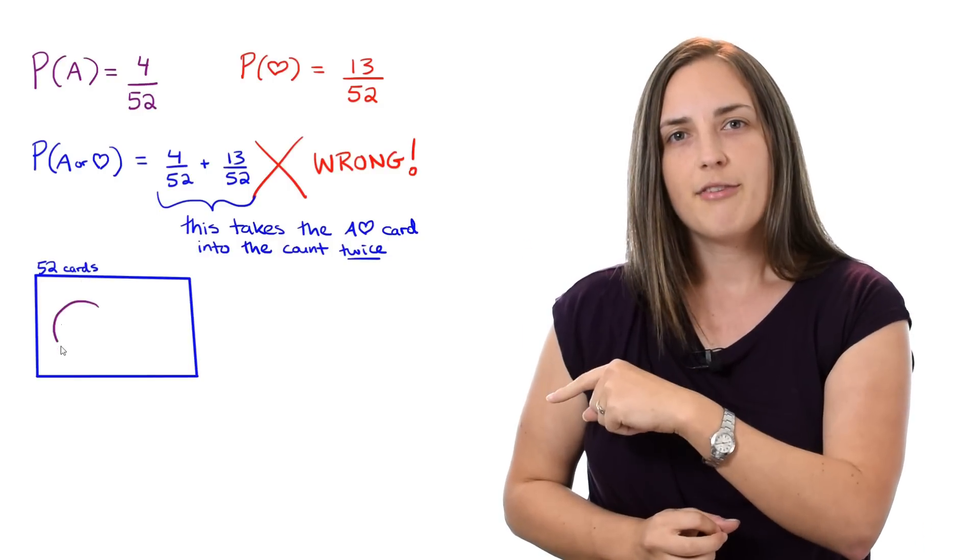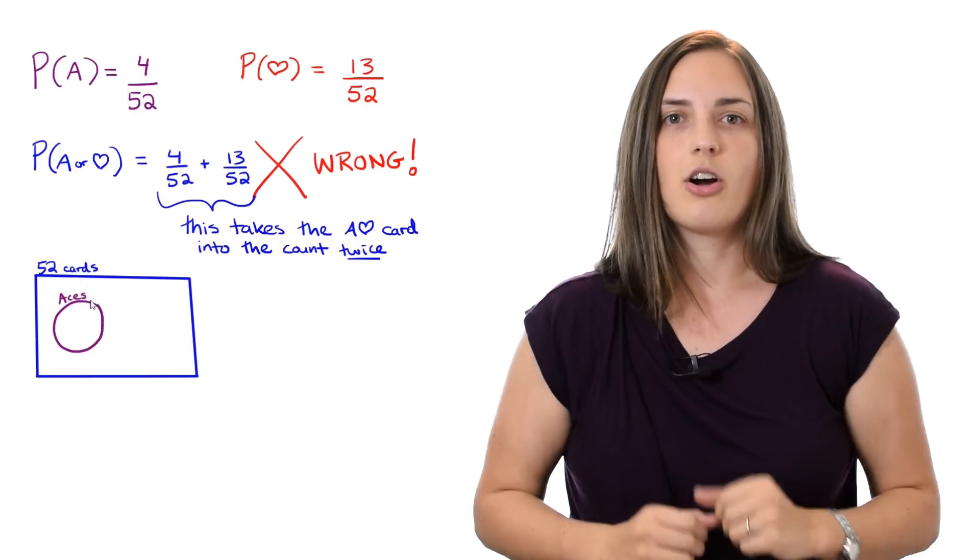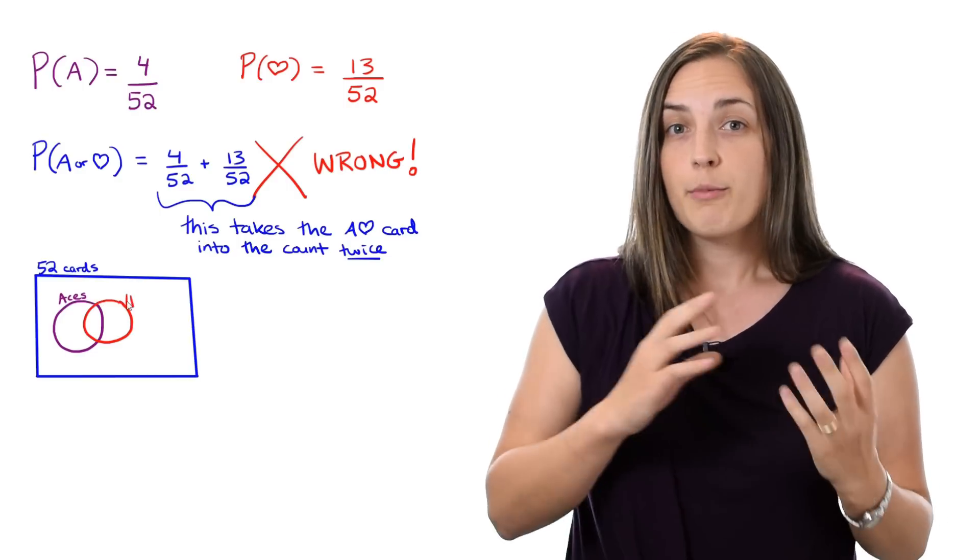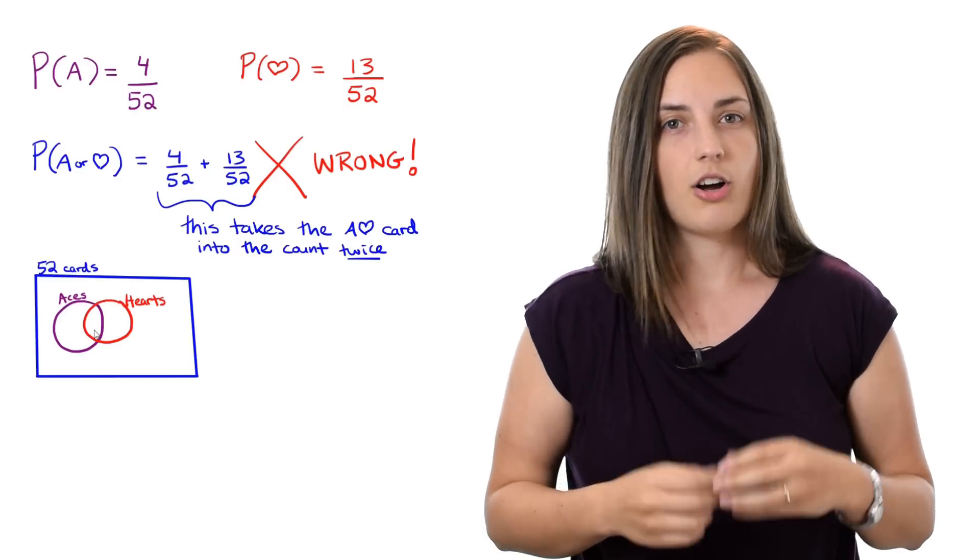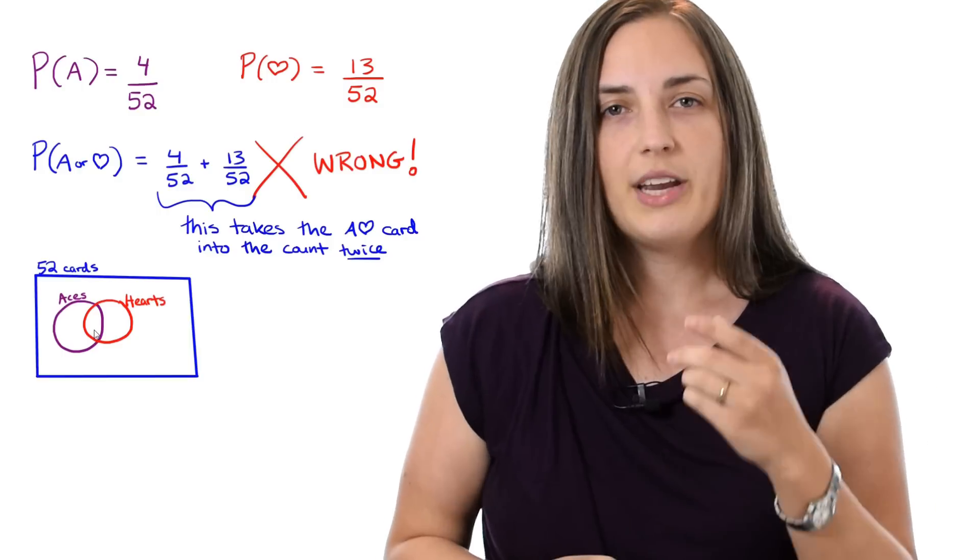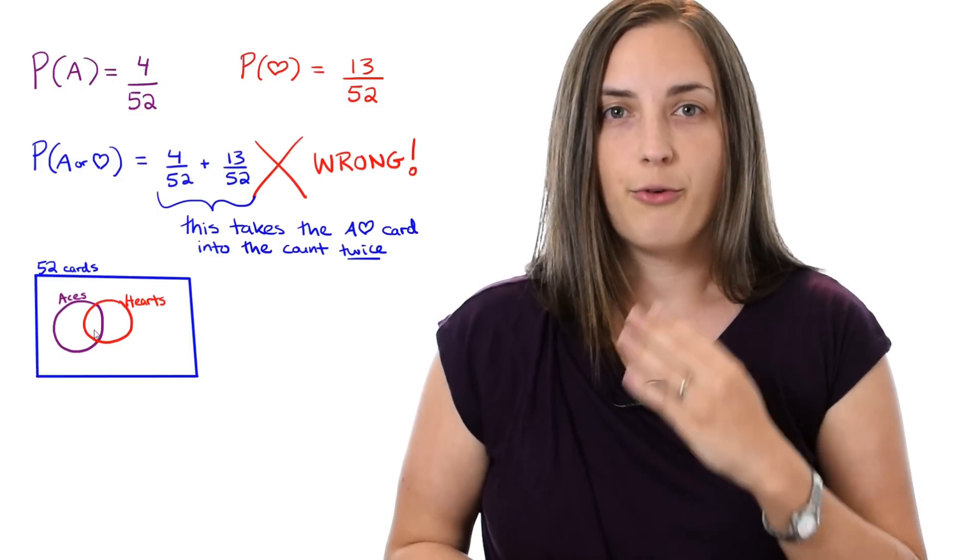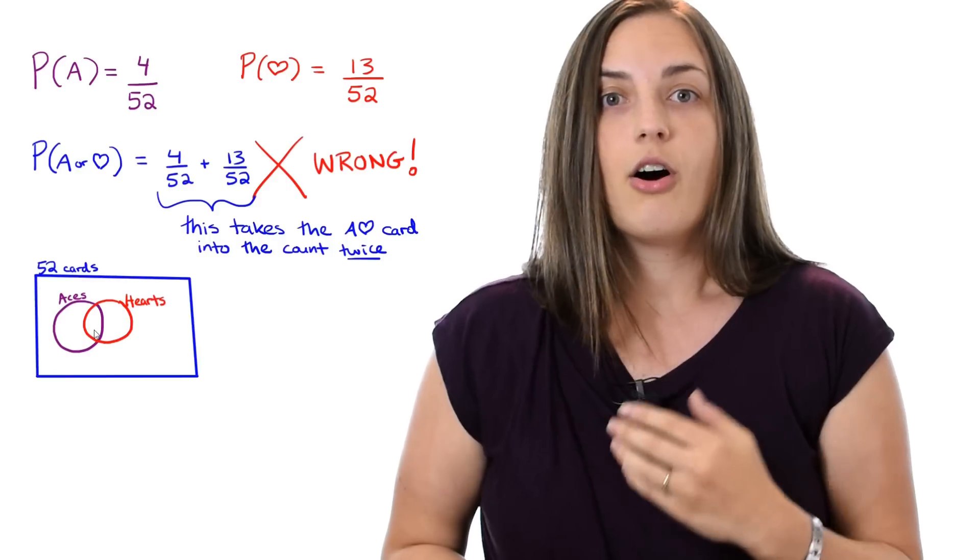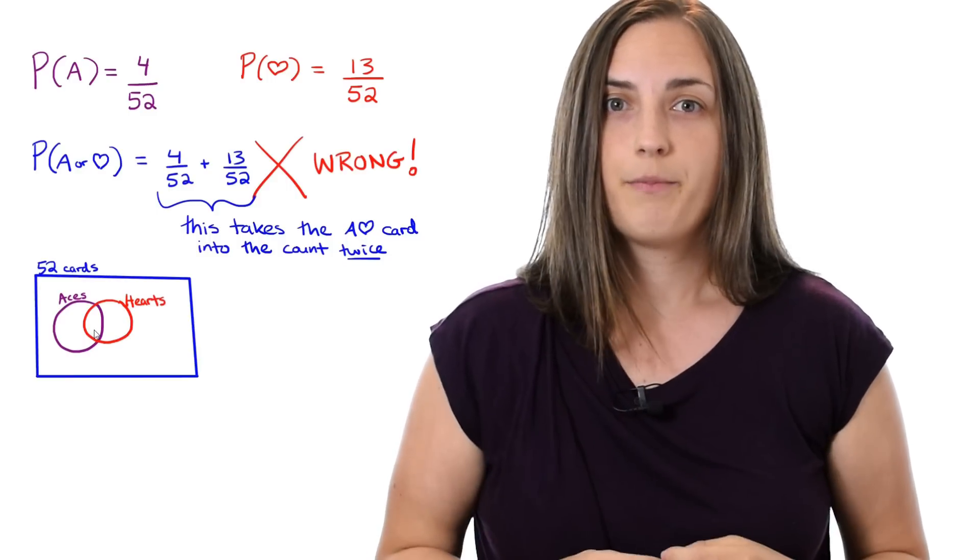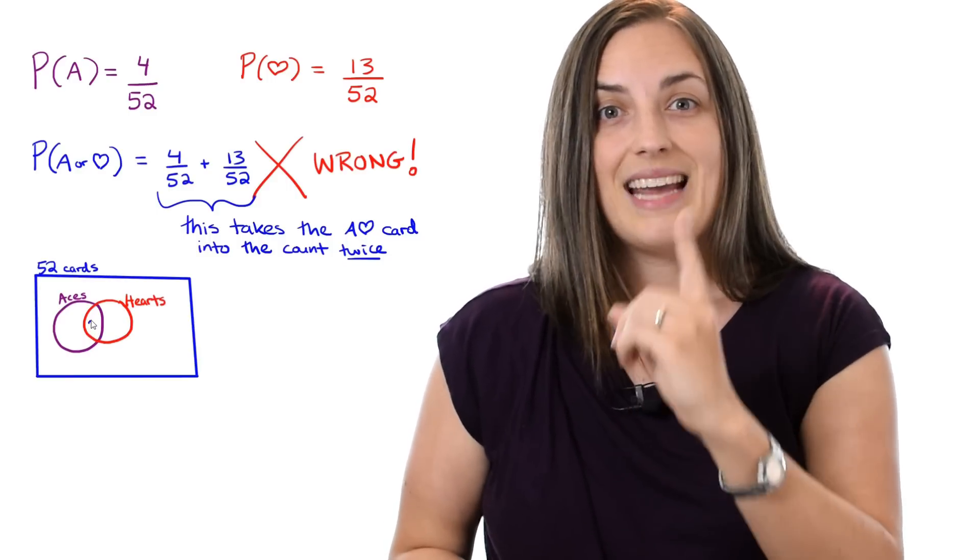The blob on the left hand side just represents all the Ace cards. And then let's draw another blob which represents all of the Heart cards. Now notice that I've had those overlapping. We know that there are actually four Aces in total and there are 13 Hearts in total. But there's one Ace of Hearts.